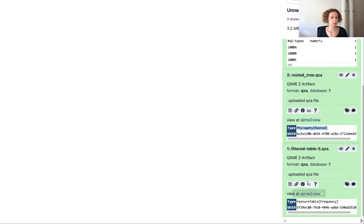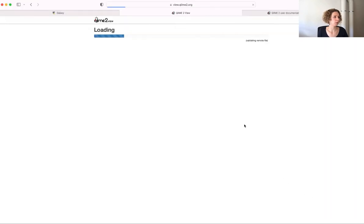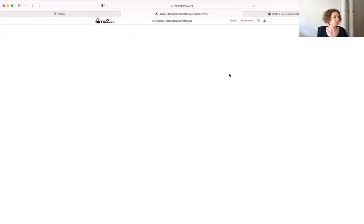of type feature table. So we can have a look at this by hitting QIIME2 view, and it will automatically open the QIIME2 view in the browser. Now, let's look at the provenance.